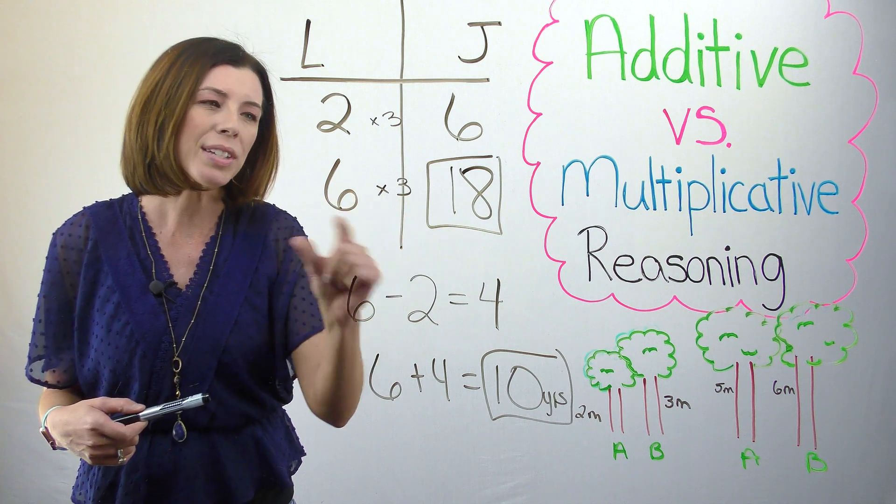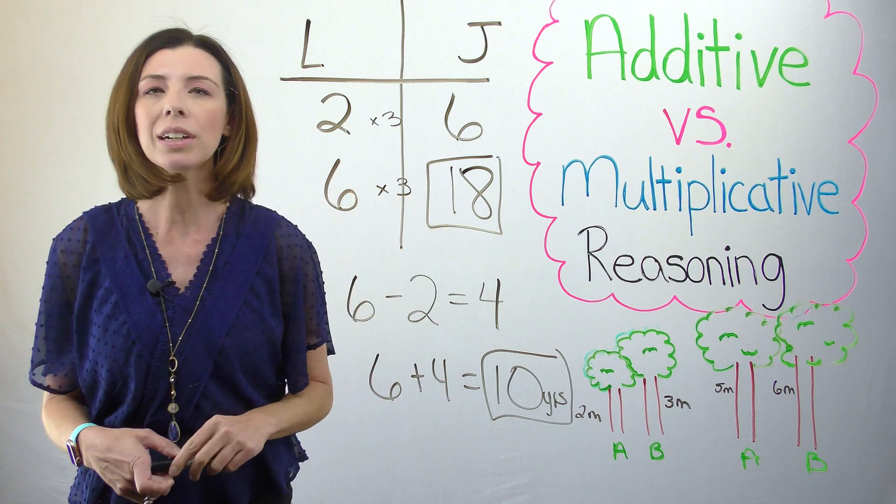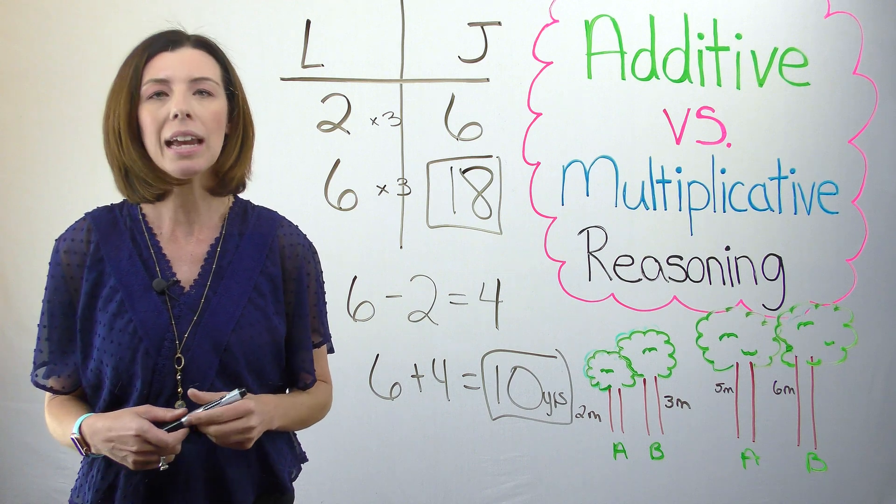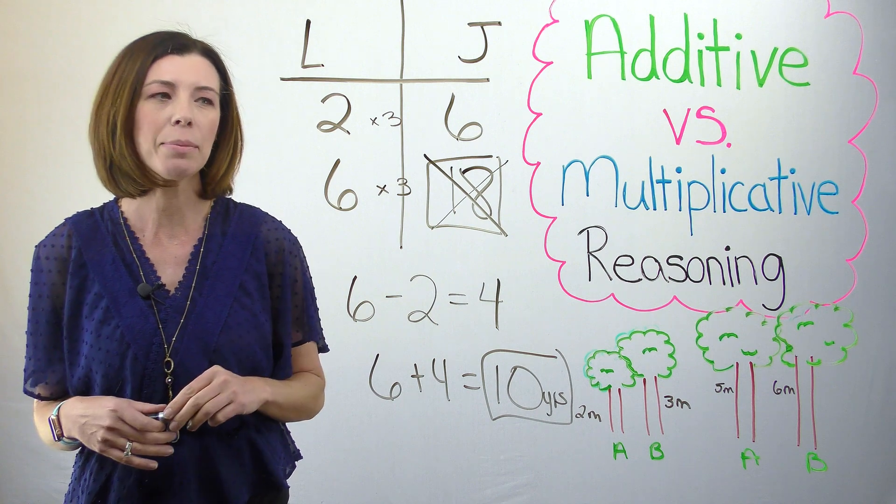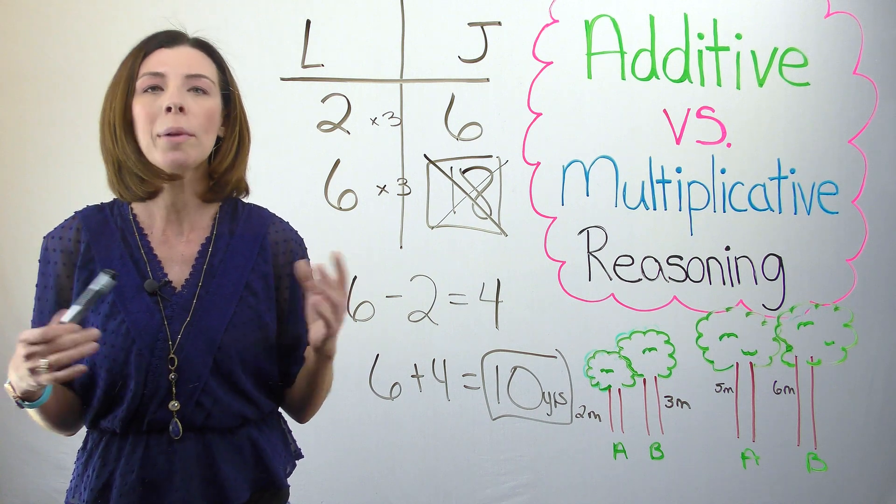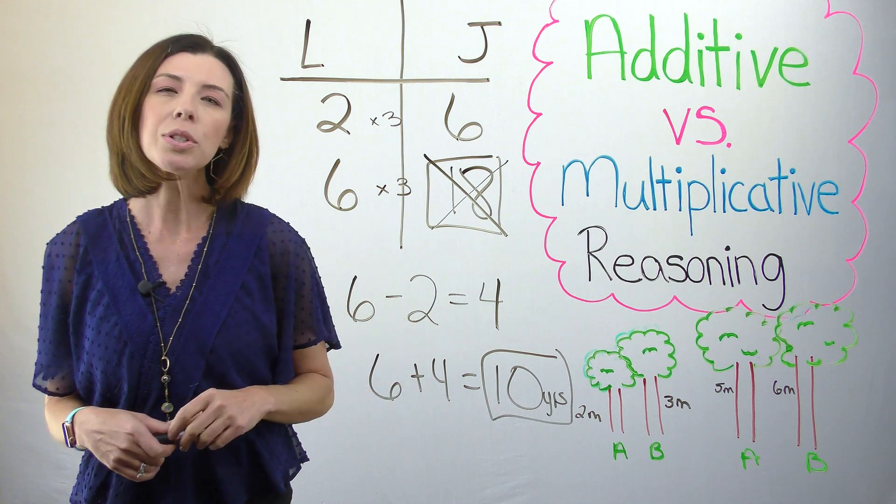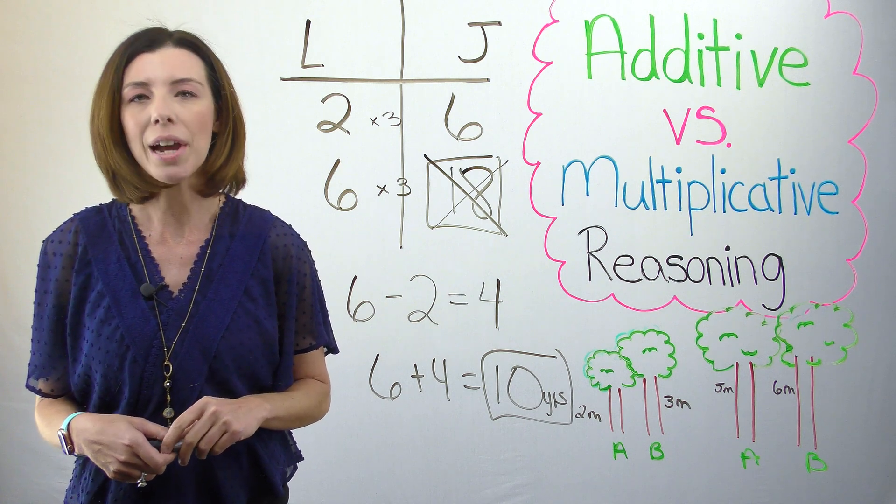So it makes more sense for me to just add the 4 years to his age to get the correct age of 10 years old. So he's not 18 years old. There's no way he was able to suddenly become so much older when really he was only 4 years older than Lisa the whole time.